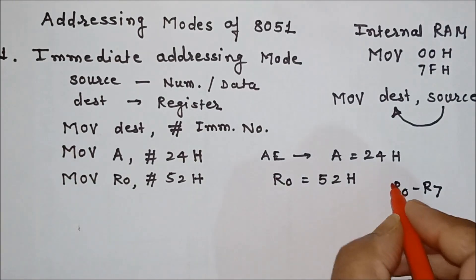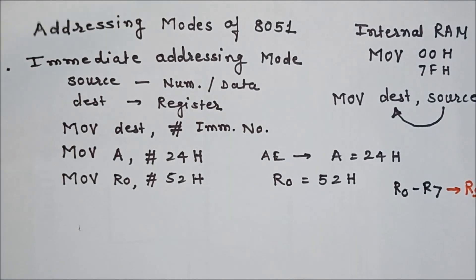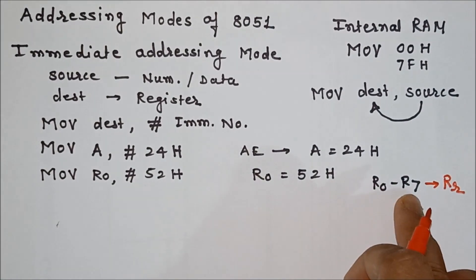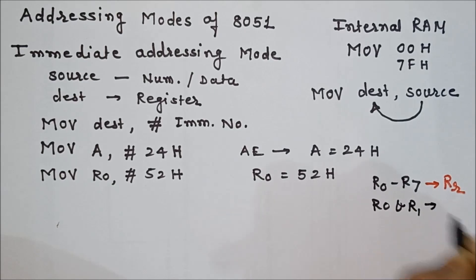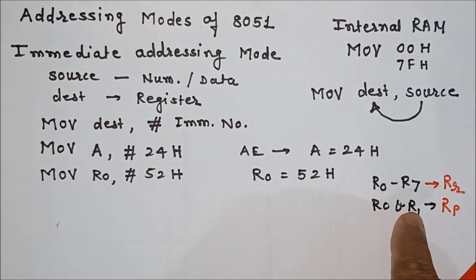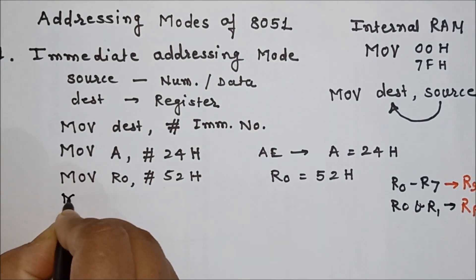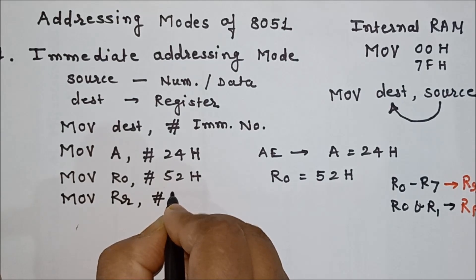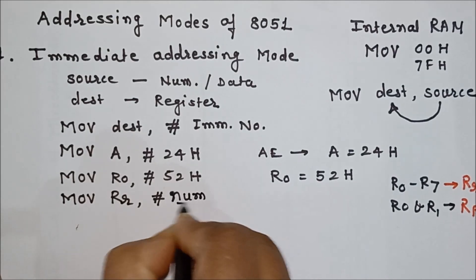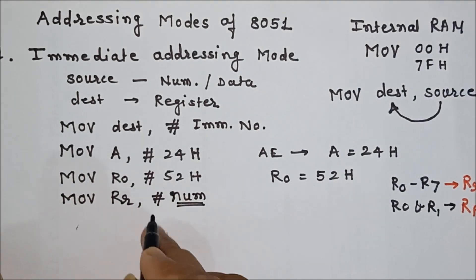Whenever we use R0 to R7, I will write Rr to indicate any register from R0 to R7. For R0 and R1 specifically, I will use the letter Rp. So for standardization, the instruction format can be written as: MOV Rr, #immediate_number — meaning we can store any data in any register from R0 to R7.